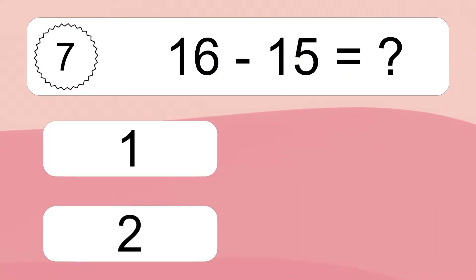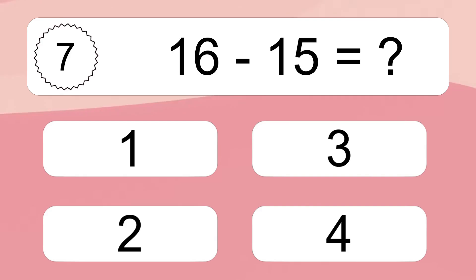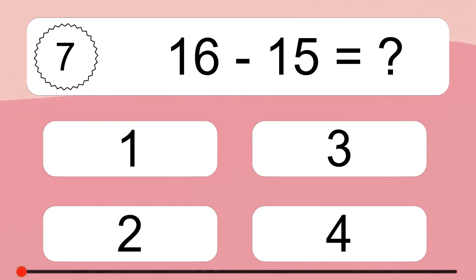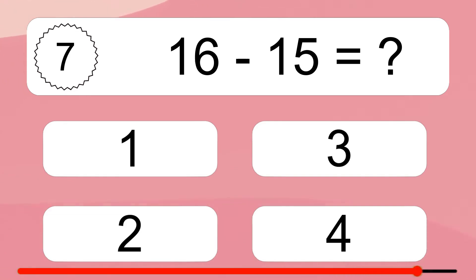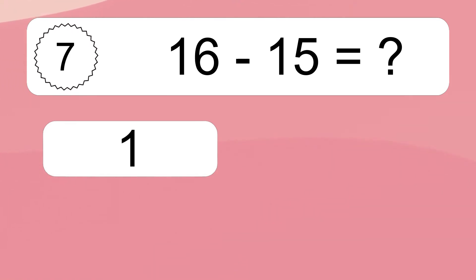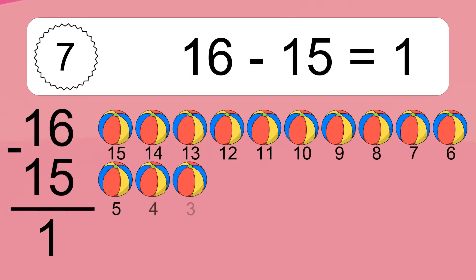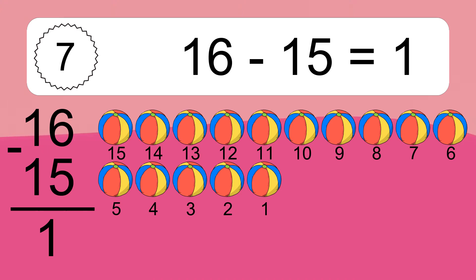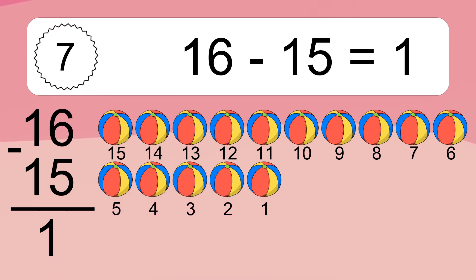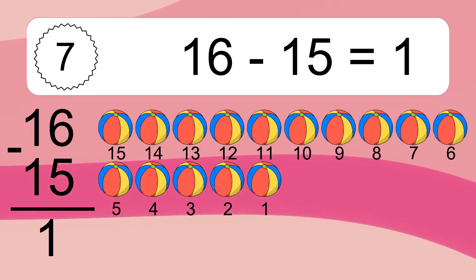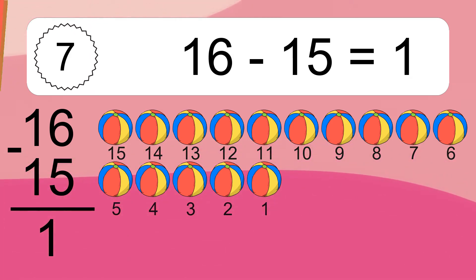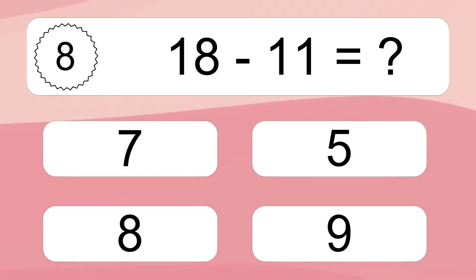16 minus 15 equals what? 16 minus 15 equals 1. Let's count it: 15, 14, 13, 12, 11, 10, 9, 8, 7, 6, 5, 4, 3, 2, 1.